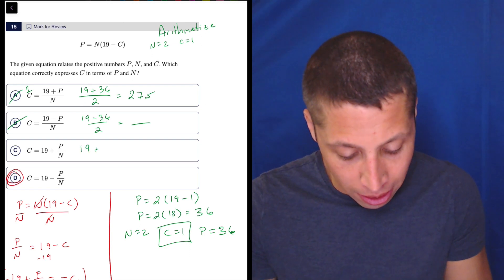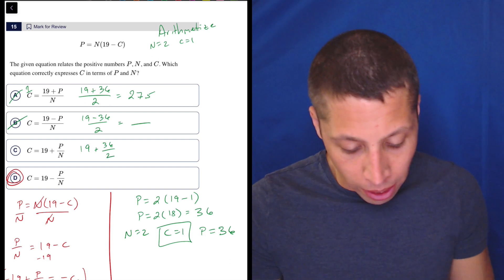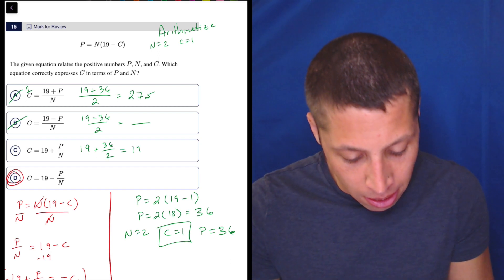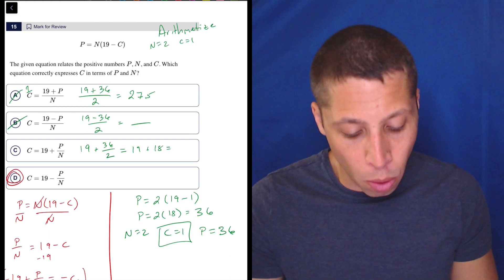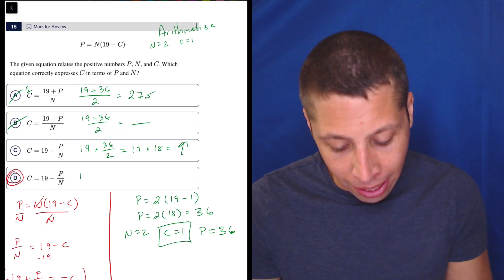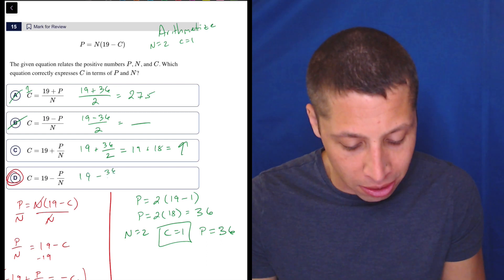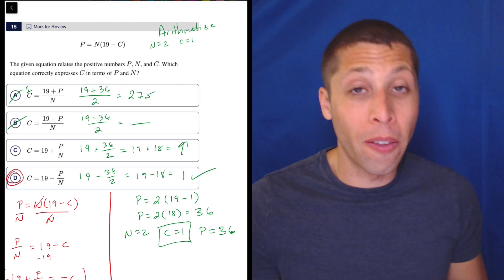This is going to be 19 plus, we said P is 36, and N is two. So that's 19 plus 18. And again, too big. It needs to be one. So we're not quite there, but we can see if it's too big, it's because we're adding. And maybe if we subtract 36 over two, is 19 minus 18, we get the one that we were looking for.